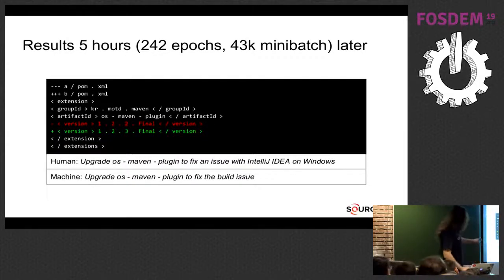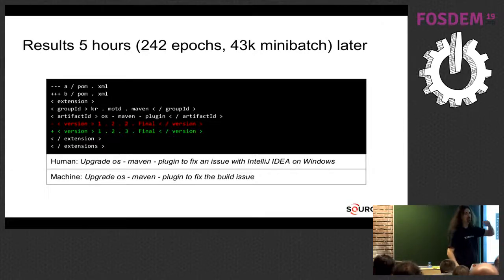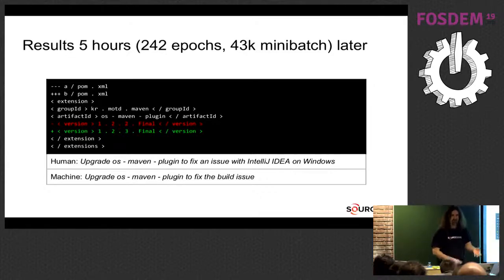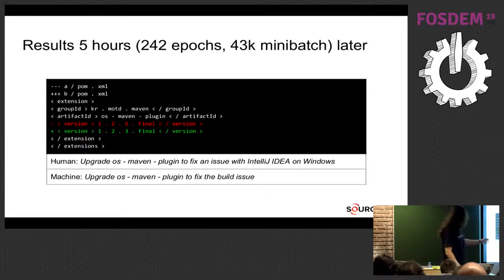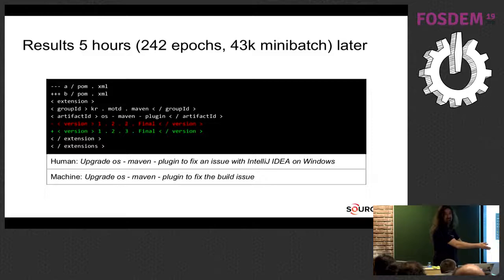My favorite example: in the POM file of a Maven plugin, version 1.2.3, the human wrote 'update the OS Maven plugin to fix an issue with IntelliJ IDEA on Windows.' There was no way the machine could know about the Windows problem, and so the machine said 'upgrade the OS Maven plugin to fix the build issue.' Because if you're fixing the POM file, it means you have a build issue — and that's what the machine learned.